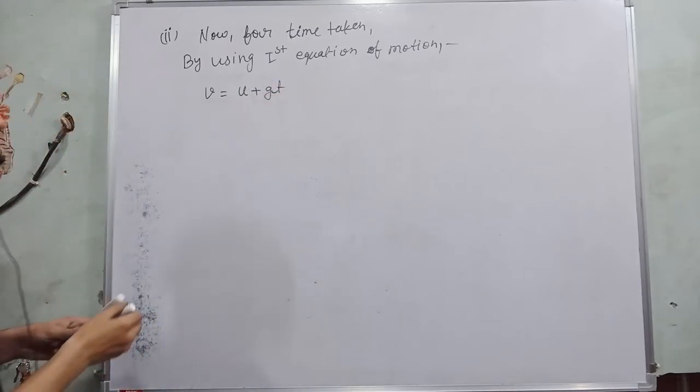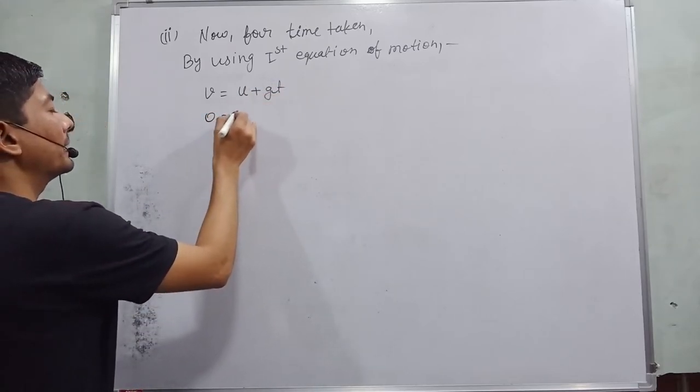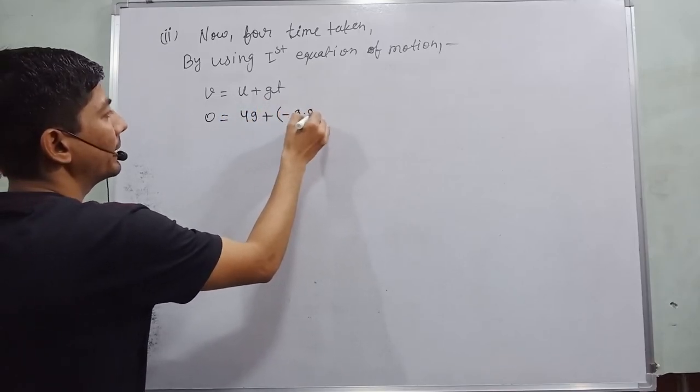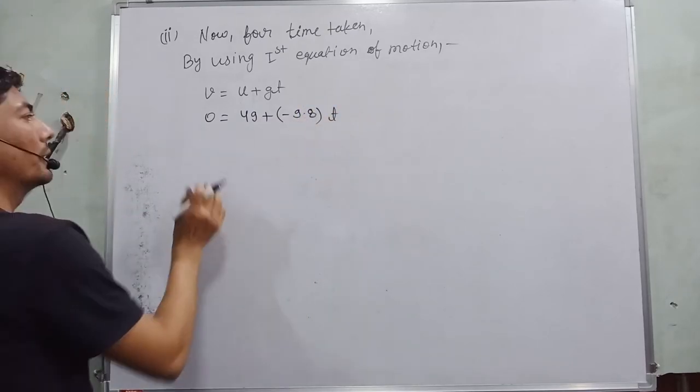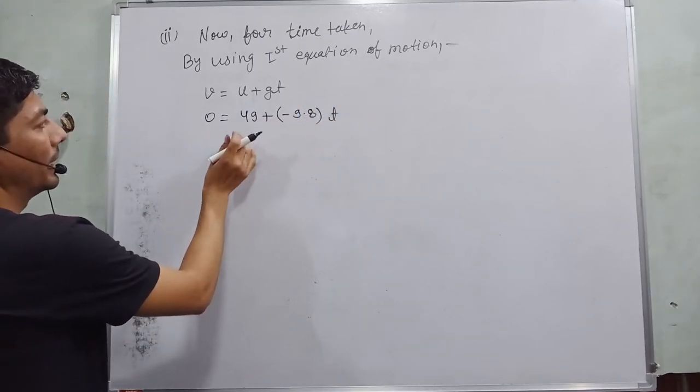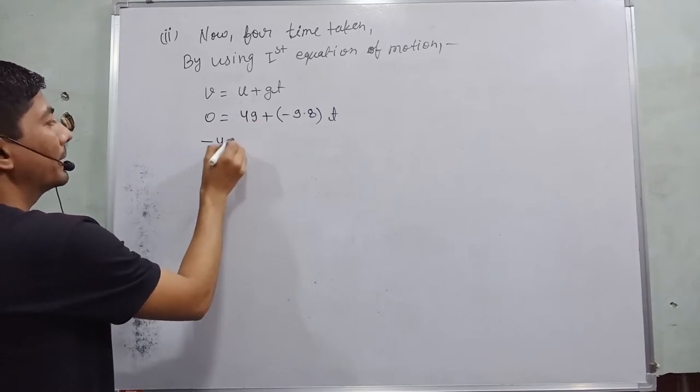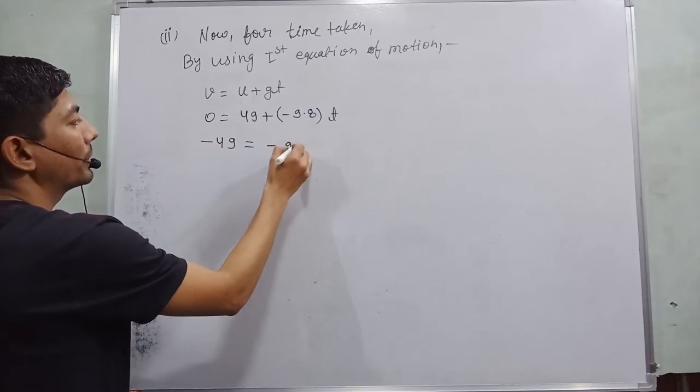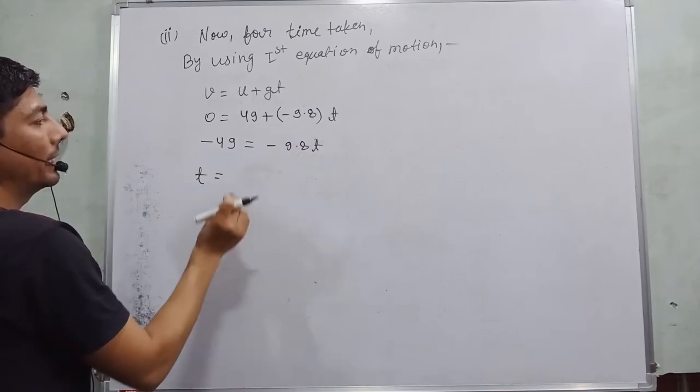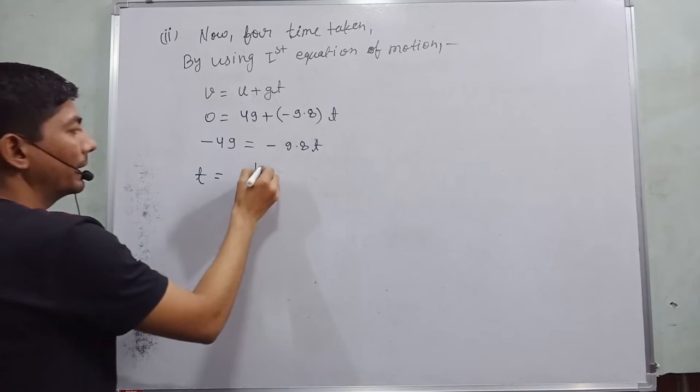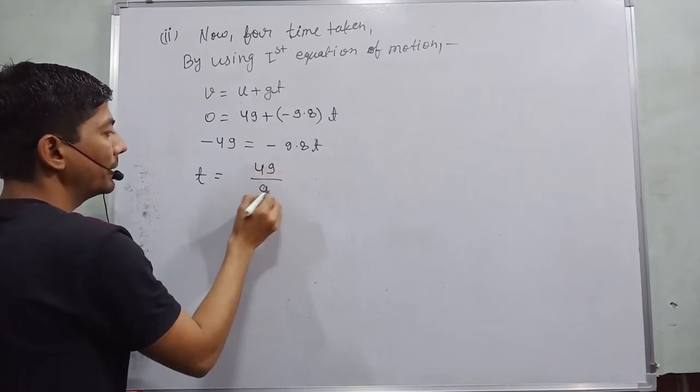Where final velocity v is 0, initial velocity u is 49, and g is minus 9.8, we need to find out t. So here 0, and this 49 goes to the left hand side become minus 49, and this will be minus 9.8 into t. For the value of t, this negative sign, this negative sign cancel out, become 49 over 9.8.